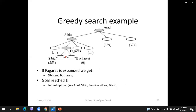The next step will simply choose Fagaras — we can go back to Sibiu or go to Bucharest. That allows us to find the path between Arad and Bucharest. But if you do the math, you will see that this is not the optimal one — it's not the shortest path between Arad and Bucharest. So it finds a solution, but it doesn't find the optimal one.